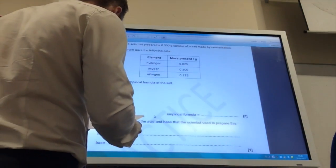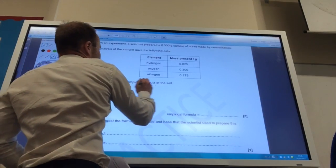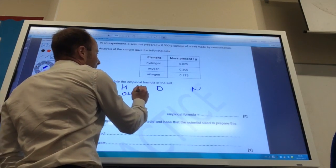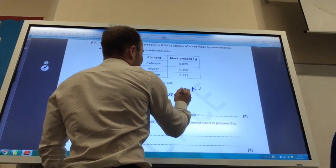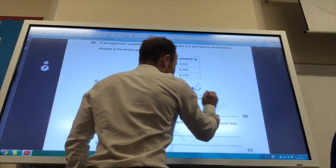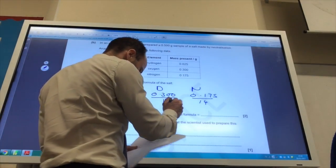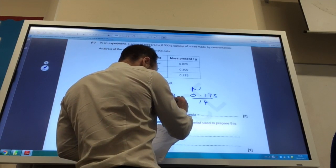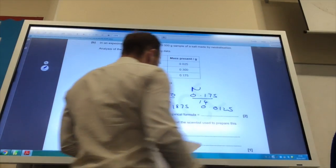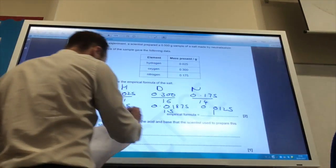Time to do an empirical formula now. I have got hydrogen, oxygen, and nitrogen. So hydrogen is 0.025, oxygen is 0.300, and nitrogen is 0.175. You divide by the relative atomic mass of each. This you get 0.025, this becomes 0.01875, and this is 0.0125. You divide by the smallest one, which is of course this one, that's 1, that is 1.5, and that is 2. So you have to times everything by 2, which gives you 4 to 3 to 2.